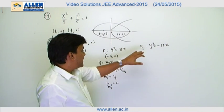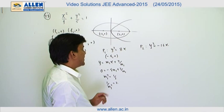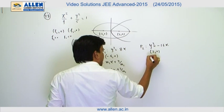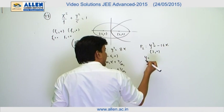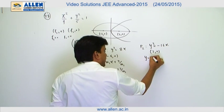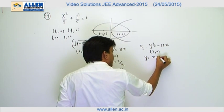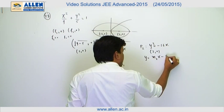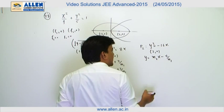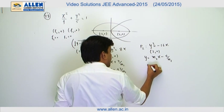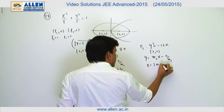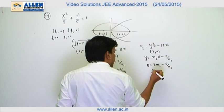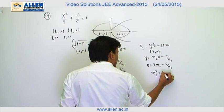The tangent to parabola P2 passes through f1, which is (2, 0). The equation of this tangent is y = m2·x + a/m2, where a = -4, giving y = m2·x - 4/m2. Since this passes through (2, 0): 0 = 2m2 - 4/m2, so m2² = 2.